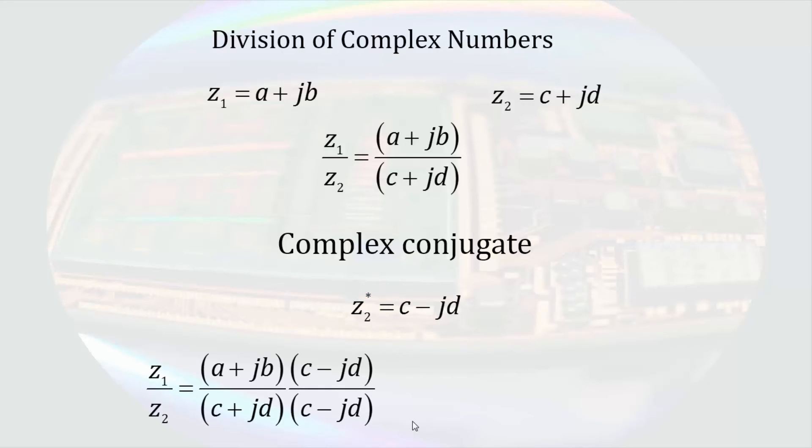We can take our quotient and multiply it by one without changing it. Now one comes in many forms, and in this case we're going to use the complex conjugate of z2 over the complex conjugate of z2.